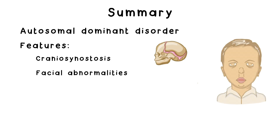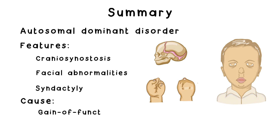To summarize, Apert Syndrome is an autosomal dominant disorder that features craniosynostosis, differences in facial appearance, and syndactyly, caused by specific gain-of-function mutations in the FGFR2 gene that disrupt the balance of FGF signaling, which affects the way bones are formed.